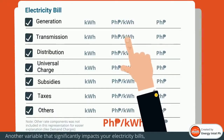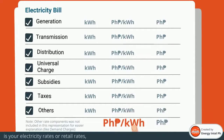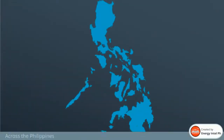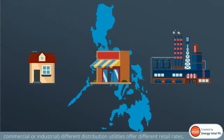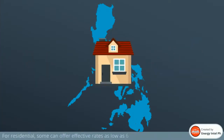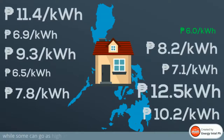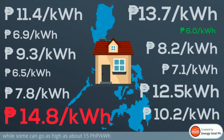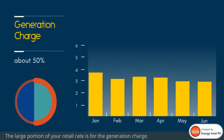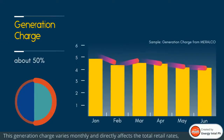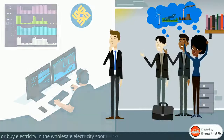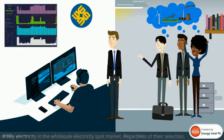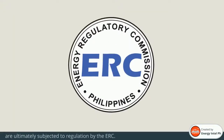Another variable that significantly impacts your electricity bills is your electricity rates or retail rates, which are regulated by the ERC. Across the Philippines and depending on your segment — whether residential, commercial, or industrial — different distribution utilities offer different retail rates. For residential, some can offer effective rates as low as 6 pesos per kilowatt hour, while some can go as high as about 15 pesos per kilowatt hour. The large portion of your retail rate is for the generation charge, which varies monthly and directly affects total retail rates. This is a result of the procurement strategy of DUs, where they source supply through power supply agreements with generation companies or buy electricity in the wholesale electricity spot market. Both power supply agreements and WESM prices are ultimately subjected to regulation by the ERC.